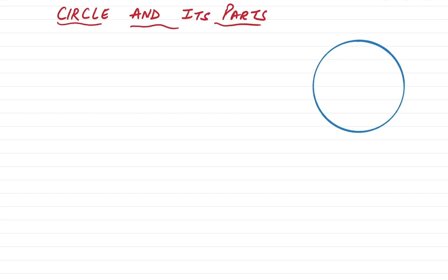Let's learn about circle and its parts. There are many different parts of a circle, or we can say a circle has many parts inside or outside it. Let's draw a circle. Let's start from the definition of a circle.